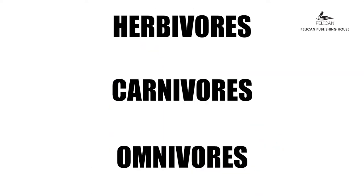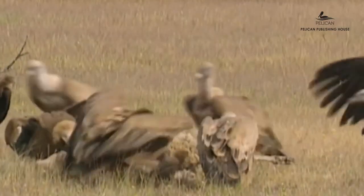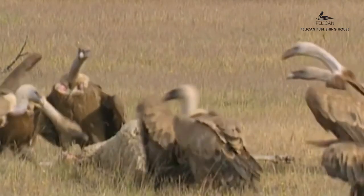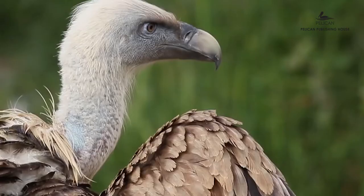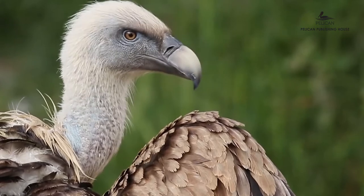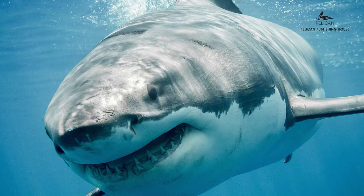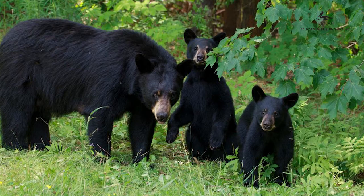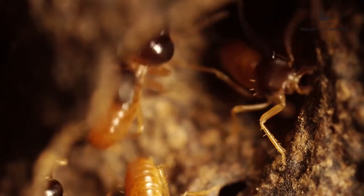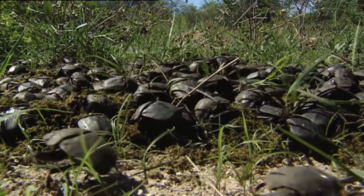Apart from these three categories, some animals have different food habits. Scavengers are animals that feed on the flesh of decaying animals and plants. Vultures are the only complete scavengers — they feed only on dead and decaying animals. Animals like crows, sharks, and bears scavenge only if necessary. Scavenging is also done by insects like termites and beetles.